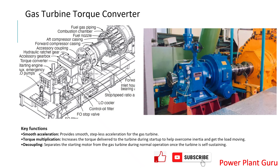A torque converter is a device used in a gas turbine for functions like smooth acceleration and, importantly, stepless acceleration. A mechanical gearbox would not be that smooth — it would have steps, which is not ideal for maintaining smooth combustion during the acceleration phase when combustion starts and the engine begins accelerating.